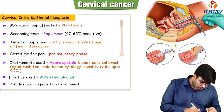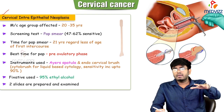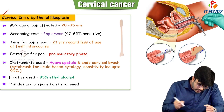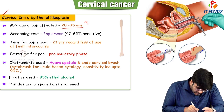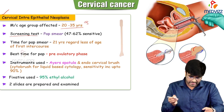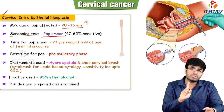The most common age group affected by cervical intraepithelial neoplasia is 22 to 35 years, while cervical cancer shows bimodal distribution. The screening test done for both CIN and cervical cancer is the Pap smear. Pap smear is a screening test — not a diagnostic test — with almost 47 to 62% sensitivity.